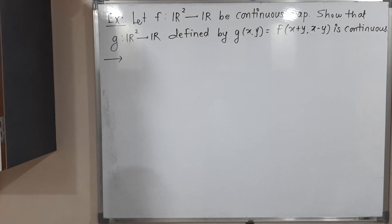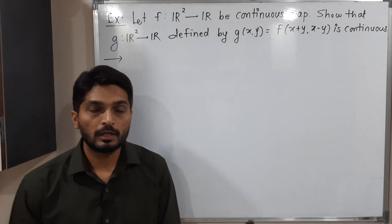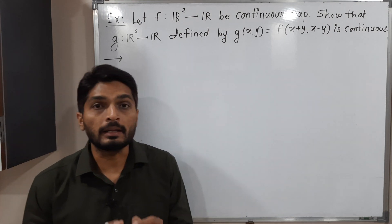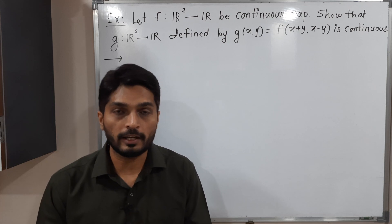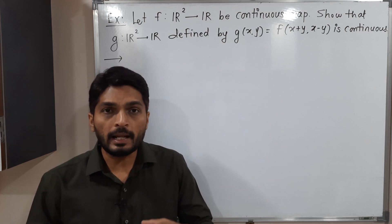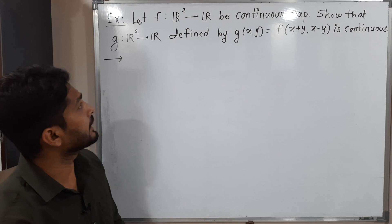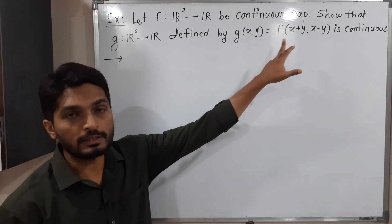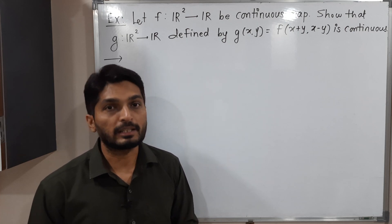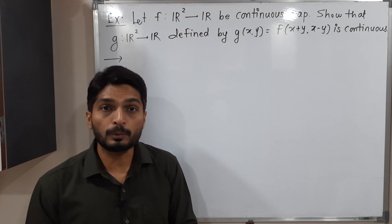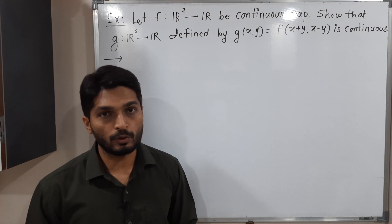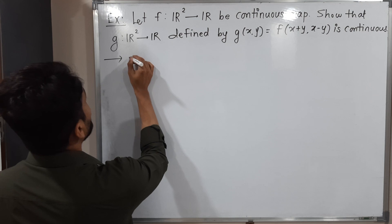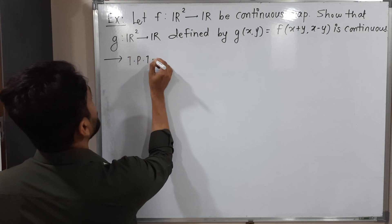In this video we are going to discuss this example. We have a function f defined from ℝ² to ℝ, and the important information is that function f is continuous. With the help of function f, one more function is defined — that is g(x,y) = f(x+y, x−y). We have to prove that g is also continuous on ℝ².